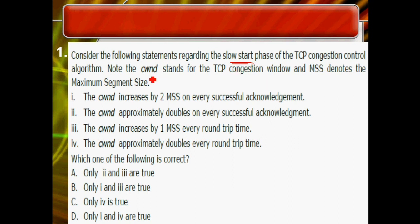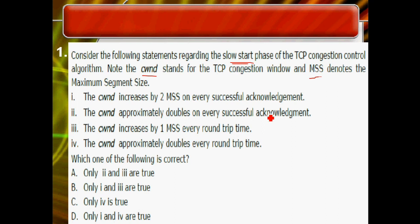There are two key parameters: CWND, the congestion window, and MSS, the maximum segment size. We are given four statements and must choose the correct option. In the slow start phase, the congestion window size undergoes exponential increase.